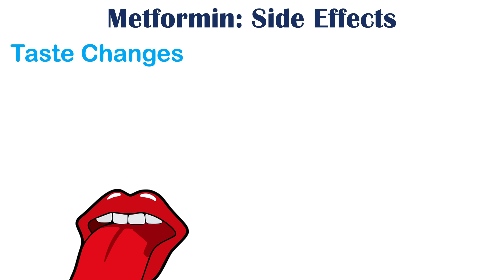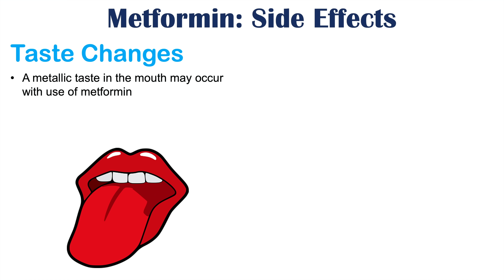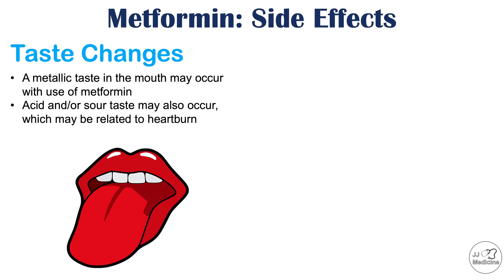Some other important side effects of metformin use are taste changes. Patients often describe a metallic taste in the mouth, or a sensation of acid or sour taste, which may be related to the heartburn associated with metformin. Some patients may also describe altered or reduced taste. Metformin can reduce or alter the taste of certain foods and beverages or produce a metallic or sour taste in the mouth.